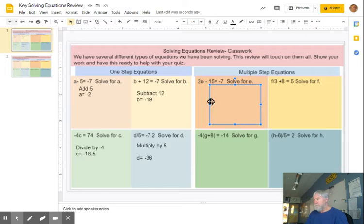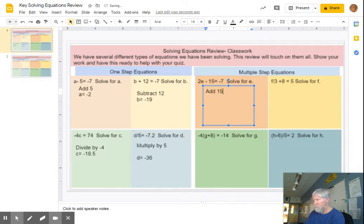Multi-step. Like for E and for F, we're going to get rid of the constant terms first. So add 15. When I add 15 to both sides, I get 2E equals 8. Now I'm ready to divide by 2. And I get E equals 4. Right? Okay. I'm going to have 8 minus 15, it's going to give me negative 7.